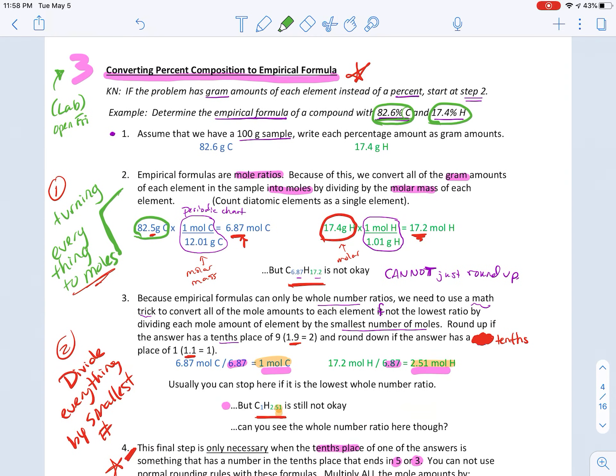This was the math, the third type of math in this section that got more challenging. And it's just because it's time consuming. So what you want to do with these problems is you will either be given an amount in a percentage or in a gram amount. If you're given it in a gram amount, you can skip step one. If you're given a percentage, you've got to do step one.